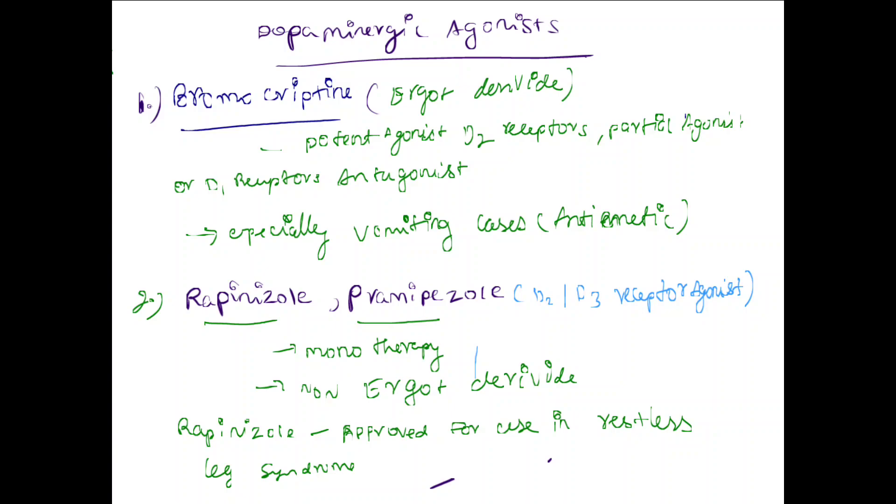Dopaminergic agonists include bromocriptine, an ergot derivative, and ropinirole, a non-ergot derivative. Bromocriptine causes vomiting in some patients, so anti-emetics should be given. Ropinirole is approved for treating restless leg syndrome.